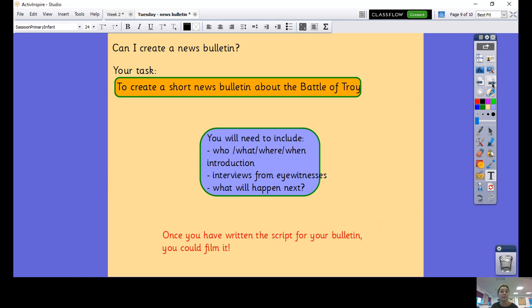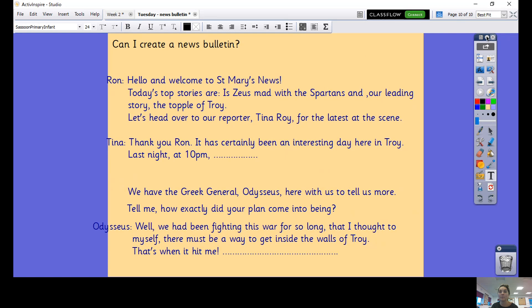Here is an example starter of a script that you might like to use as a guideline for your own script. You will need to add to this, you will need to change this to suit what you want to correlate with your notes. I've got the name of the reporter in the corner - Ron is my character in the studio, and then I've got Tina who's going to be my reporter on the ground, so she's in Troy. She's the one interviewing people and she's going to interview Odysseus. You could have your reporter interviewing one of the Greek soldiers hiding inside the horse, you could have them interviewing a Trojan who was trying to defend the city, or you could just have them interview a citizen of Troy who saw what was going on.